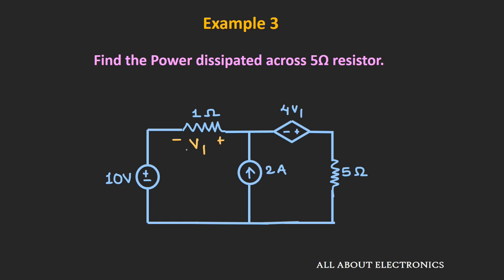In the third example, we need to find the power dissipated across the 5-ohm resistor. This circuit contains one dependent source. As discussed earlier, if the circuit contains dependent sources, those dependent sources remain ON during the superposition analysis. To find the power across the 5-ohm resistor, we first find the total current I flowing through it using the superposition theorem, considering one independent source at a time.